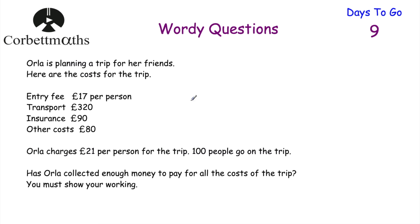Let's look at our next question. Orla's planning a trip for her friends, and here are the costs for the trip: entry fee £17 per person, transport £320 in total, insurance £90 in total, and other costs £80 in total. Orla charges £21 per person for the trip, and 100 people go on the trip. Has Orla collected enough money to pay for all the costs of the trip? You must show your working. This is a non-calculator question — press pause and try it now.